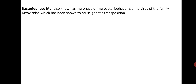In addition, the phage usually packages between 500 to 3,000 base pairs of host DNA, making phage mu a generalized transducing phage. Phage mu exhibits a temperate life cycle with its genome integrated into the chromosome of its host, particularly E. coli.